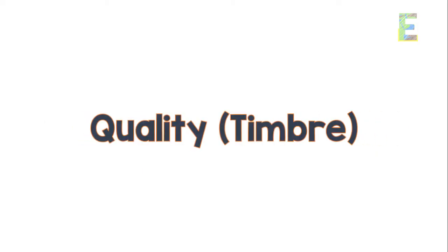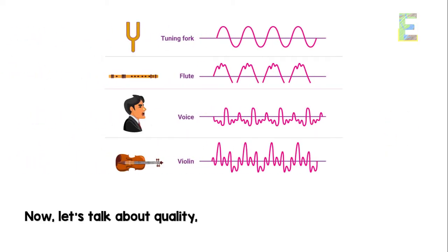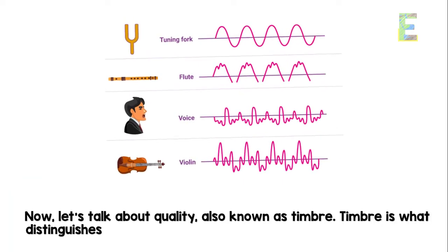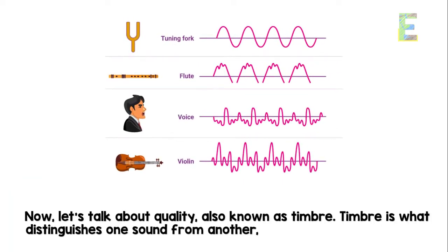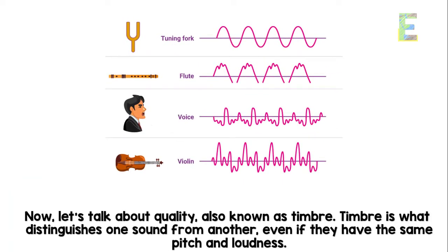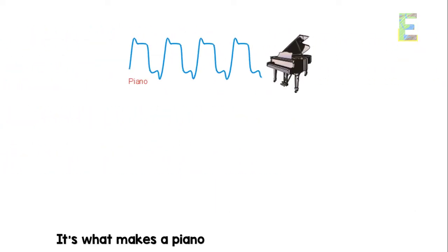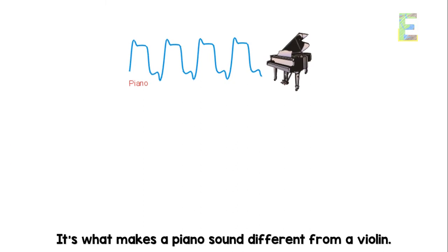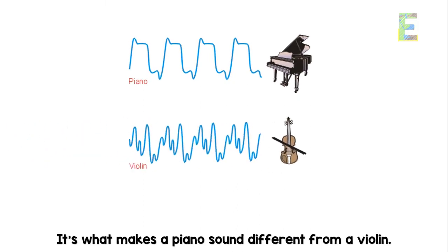Quality, also known as timbre. Timbre is what distinguishes one sound from another, even if they have the same pitch and loudness. It's what makes a piano sound different from a violin.